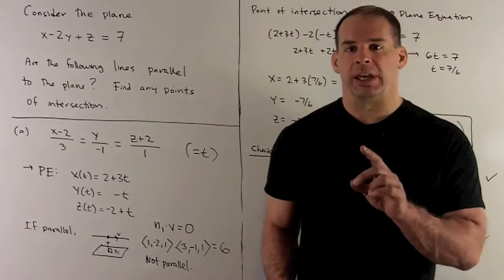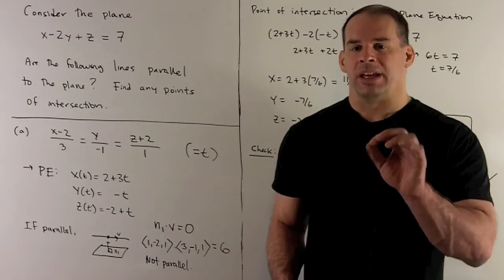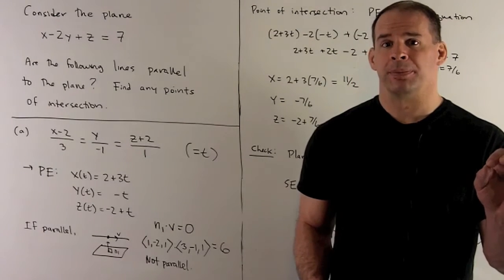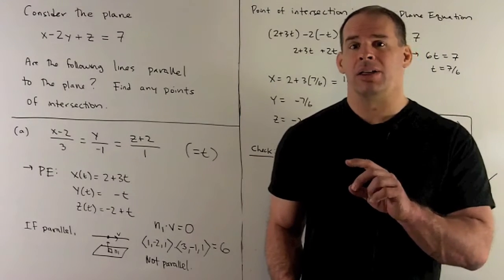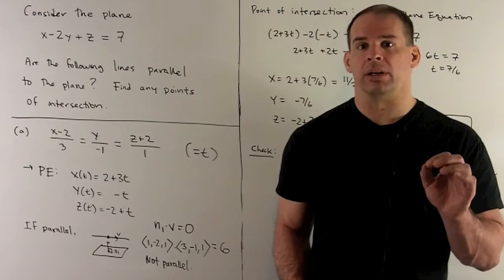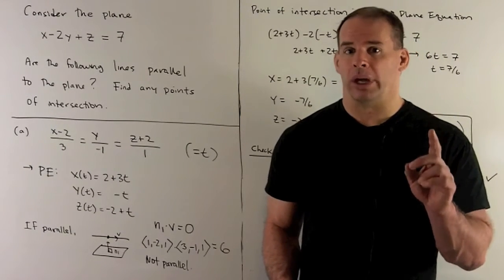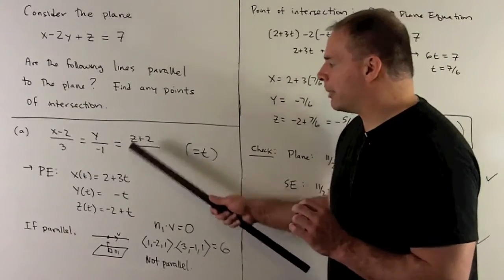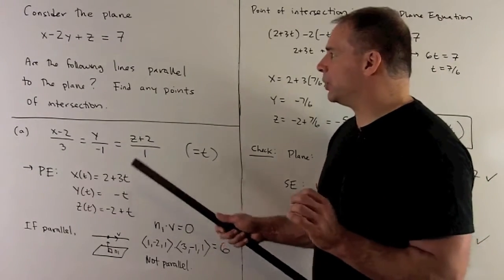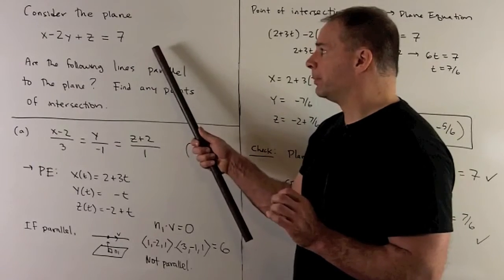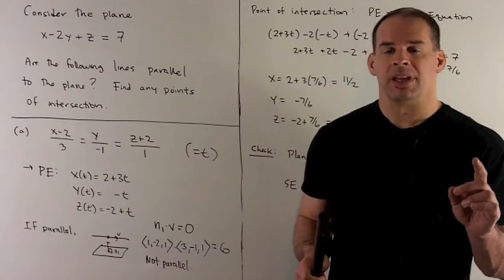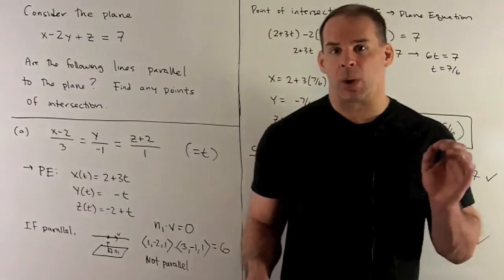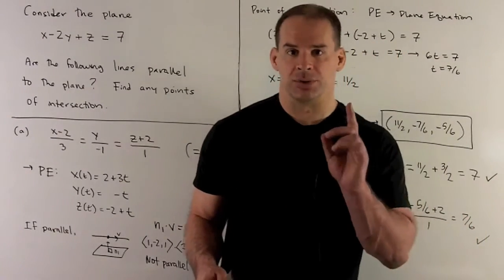When lines are parallel, there's either no intersection or the line is contained in the plane. But since they're not parallel, they intersect in exactly one point. To find that point, we take our parametric equations, substitute into the equation for the plane, solve for t, then use that t to get our x, y, and z.